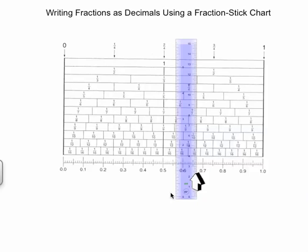Therefore, two-thirds is about equal to sixty-seven hundredths.